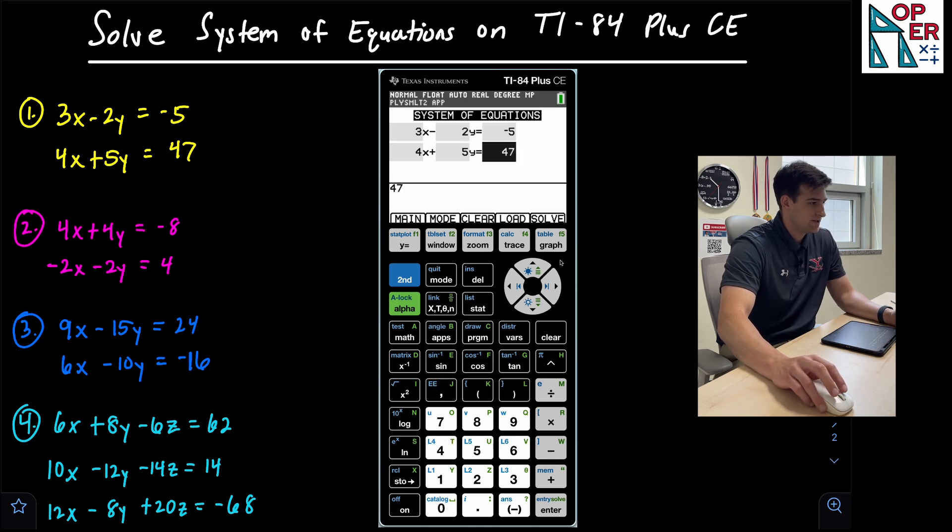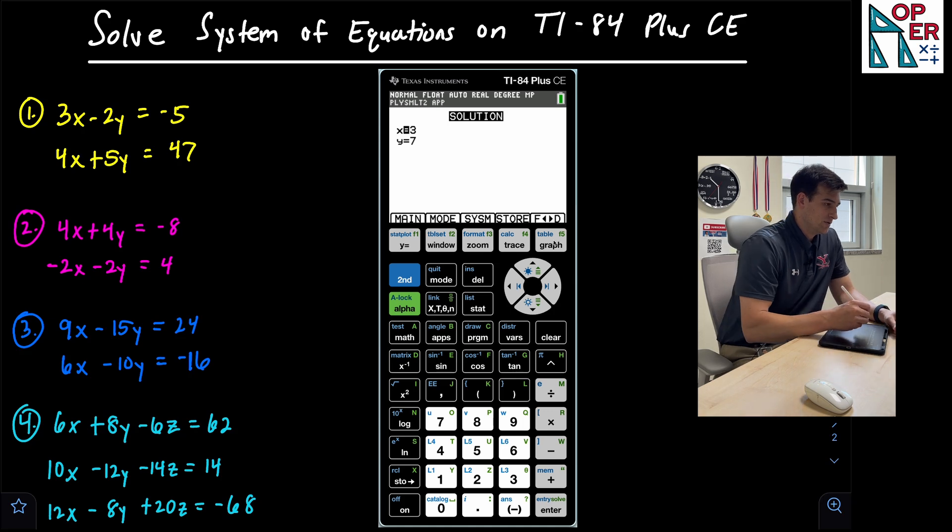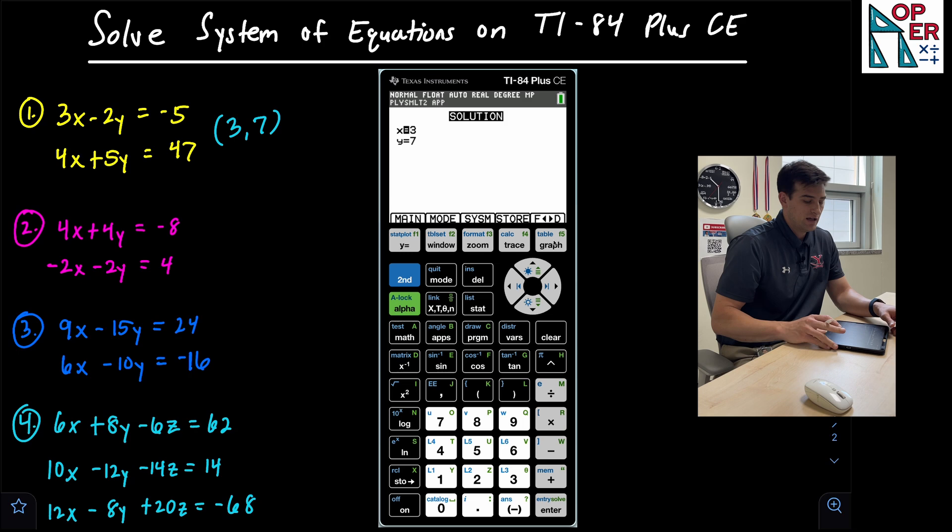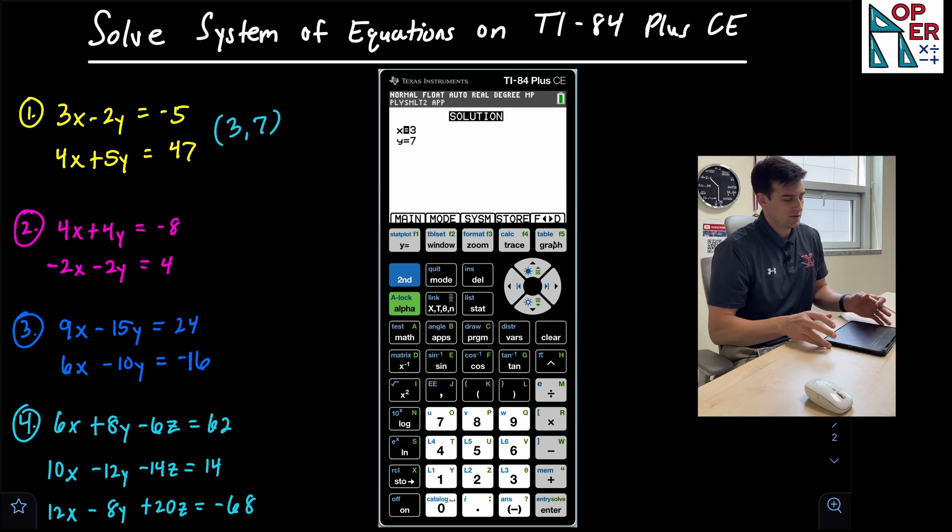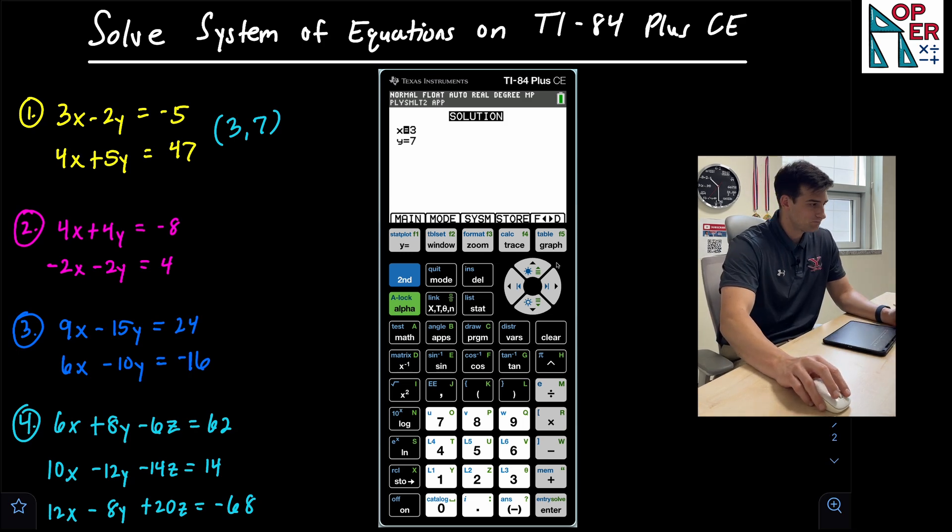I have my two equations set up the way I want. And now the graph button corresponds to this tab that says solve. So I can go ahead and hit graph and it gives me my solution. So X is three and Y is seven. And for a system, we just write that as a coordinate. So this would be three comma seven.